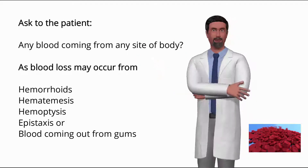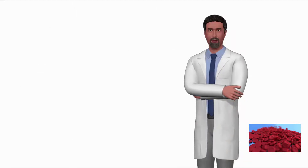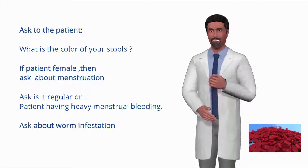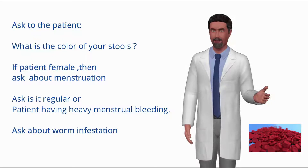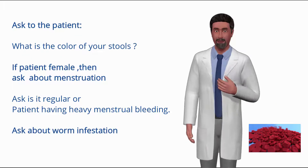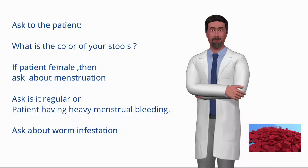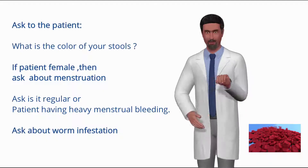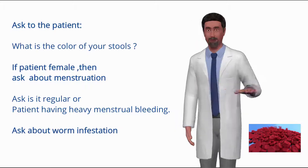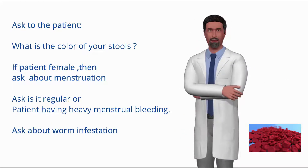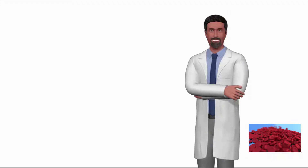Ask the patient what color their stools are — are they black? This helps rule out upper GI bleed due to gastric ulcer, etc. If the patient is female, ask about menstruation: is it regular, or is the patient having heavy menstrual bleeding? Also ask about worm infestation.